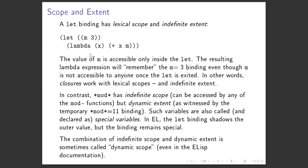Once the let is exited I cannot reference m anymore. The symbol still exists but the binding is no longer accessible once execution has left the let. However, the binding now accessible by the returned function will remain indefinitely — the extent is indefinite, because otherwise the closure would not work. If the execution leaves the let and the binding of m to 3 disappeared, then the function returned by the let would no longer work because it would try to add x to something that no longer exists. This is like programming in C where you return a pointer to a local variable — that's the way to segfaults. But in Lisp it works: I create m, bind 3 to it, return a function that references m, and that binding is available throughout the program as long as that function exists.